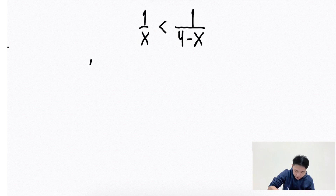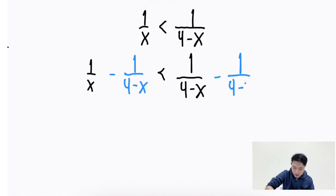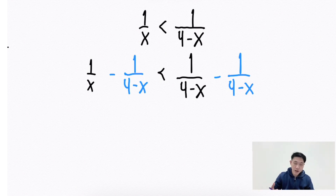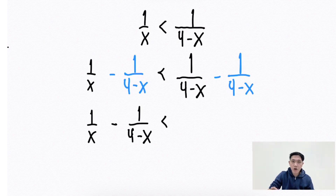So, 1 over x minus 1 over 4 minus x is less than 1 over 4 minus x minus 1 over 4 minus x. Let's simplify. 1 over x minus 1 over 4 minus x less than 1 over 4 minus x minus 1 over 4 minus x is equal to 0.